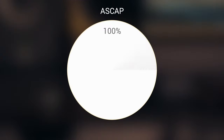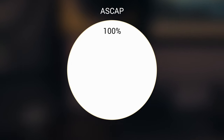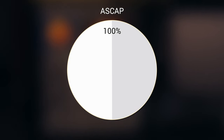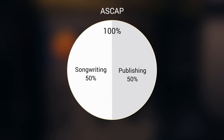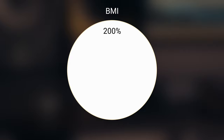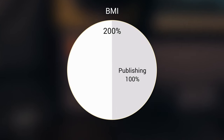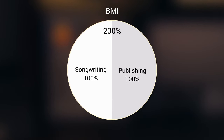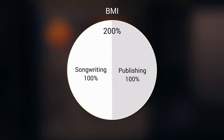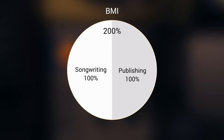Now let's talk about one major difference between ASCAP and BMI — the percentage system they use when calculating music splits. ASCAP uses a 100% scale. There are two types of royalties, but ASCAP thinks of it as one 100% pie: 50% is publishing and the other 50% is songwriting. BMI is a little different. They use a 200% system — 100% for the publishing royalty and another 100% for the songwriting royalty, totaling 200%.